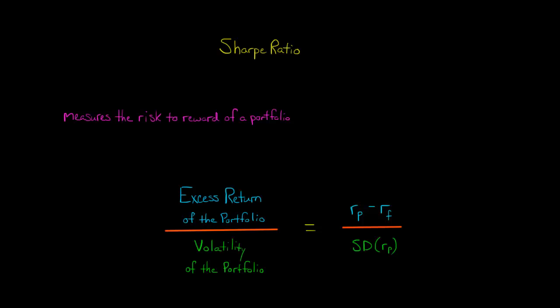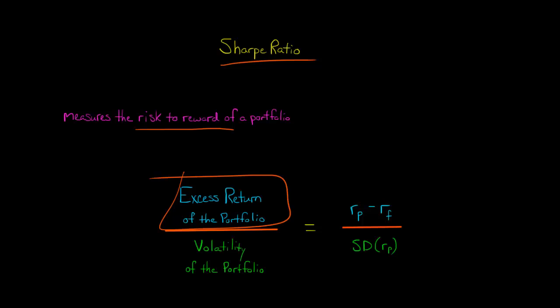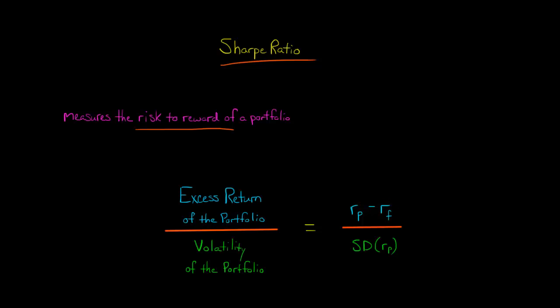In this video, I want to show you how to calculate the Sharpe Ratio. The Sharpe Ratio measures the risk to reward of a portfolio. Here's the formula: we take the excess return of the portfolio, which is the expected return of the portfolio P minus the risk-free rate of return, and we divide that excess return by the volatility of the portfolio.